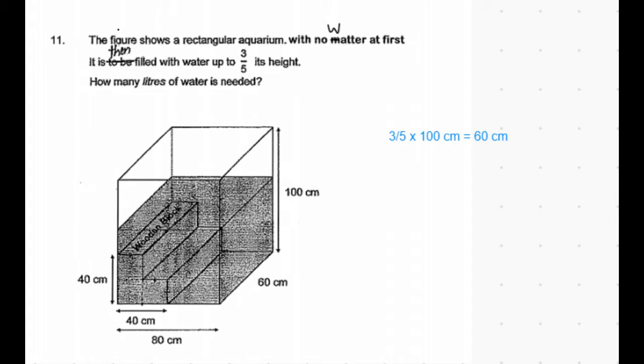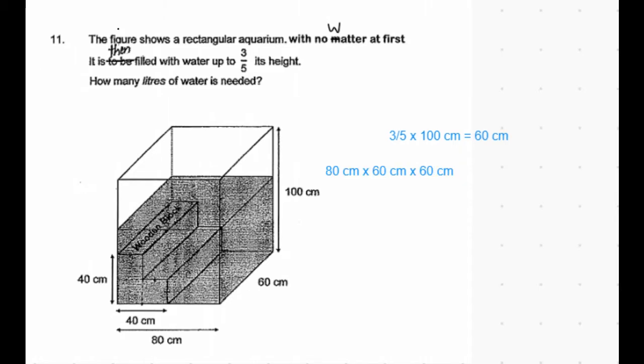Now assume there are no wooden blocks inside the container and the water is filled until three-fifths of its height. The length of the container is 80 centimeters, breadth of the container is given to be 60 centimeters times the height until the water has to be filled is 60 centimeters. So the volume of water needed would be 288,000 centimeter cube.